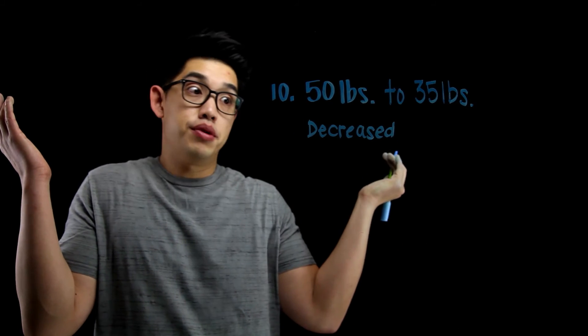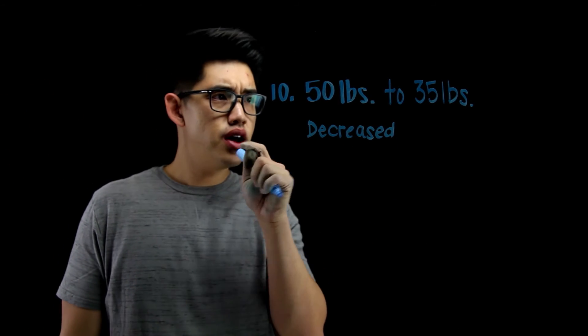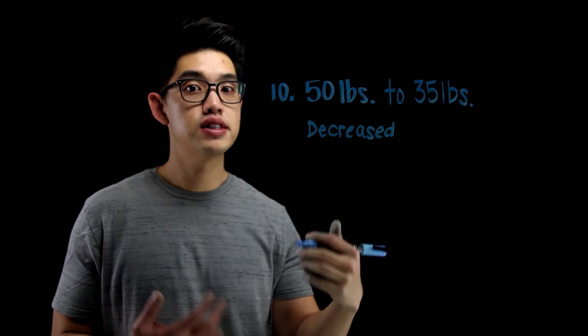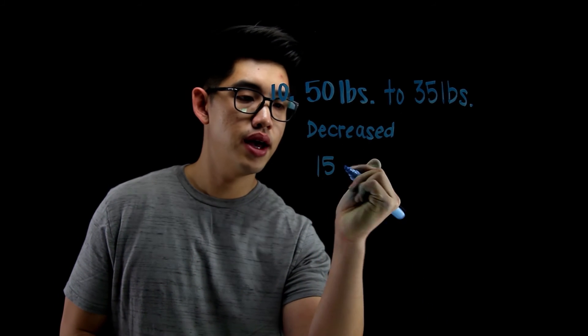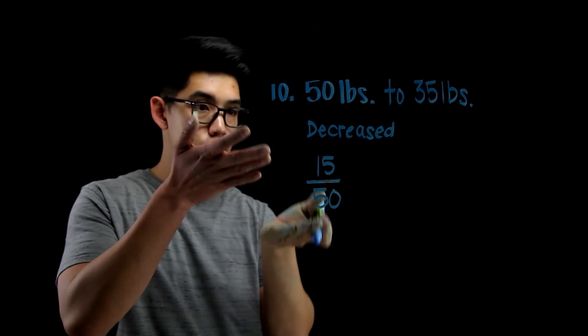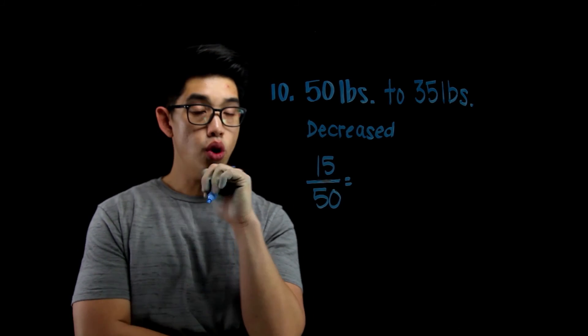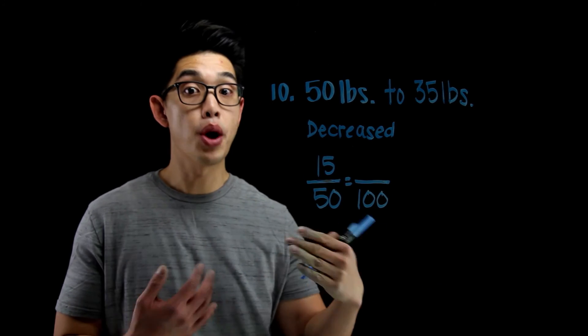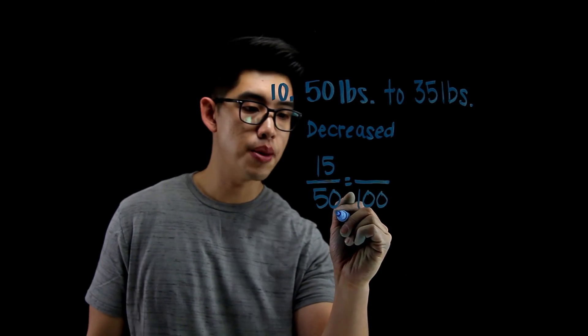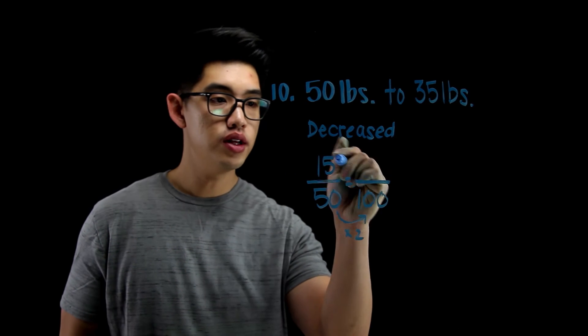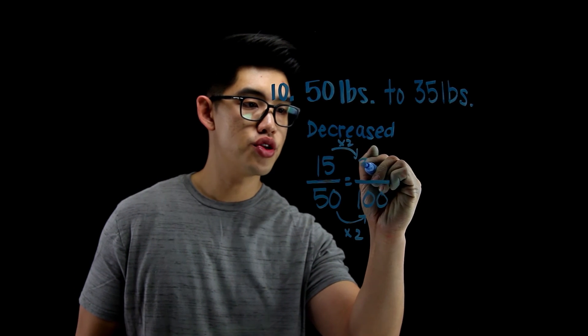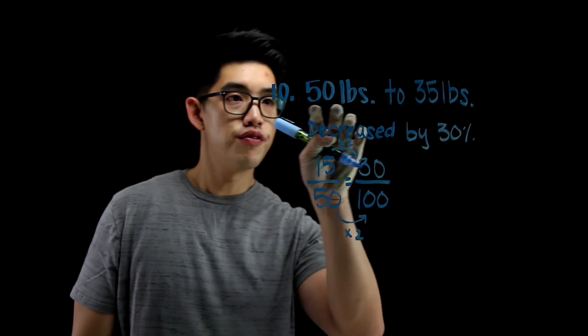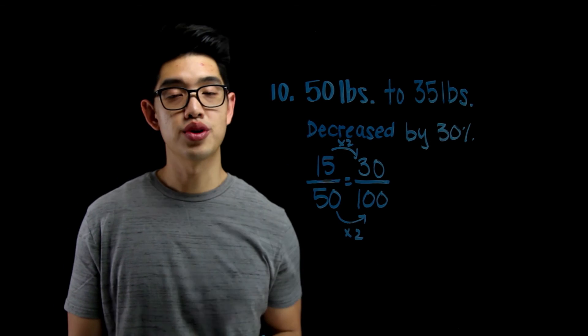And we need to figure out, by what percent? So you can first find out by how many pounds it went down by. So 50 minus 35, that's 15 pounds. So 15 pounds out of the 50 pounds, what percent was that decrease? You can set this to a denominator of 100, right? Because we're finding percent per 100. 50 became 100 because you multiply it by 2. You've got to keep it equivalent, so you've got to multiply the same to the top. 15 times 2, that's going to be 30. And that's pretty much it. It decreased by 30%. From 50 pounds to 35 pounds, it decreased by 30%. You're done.